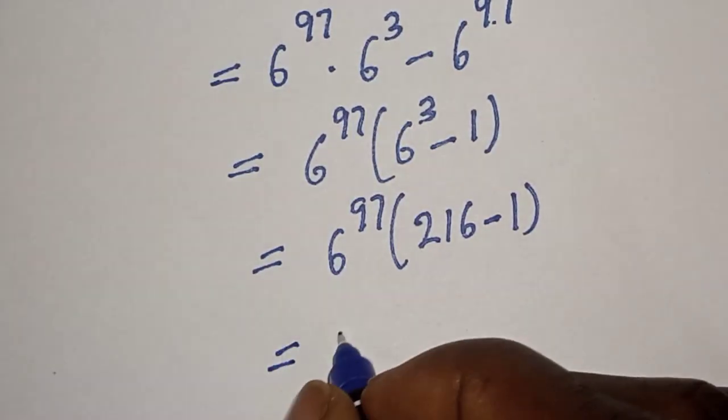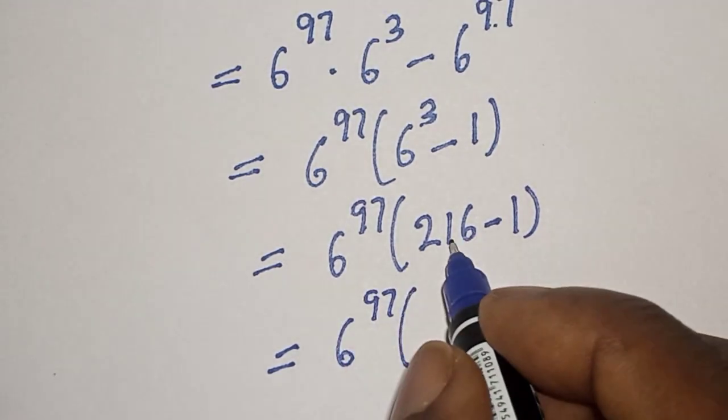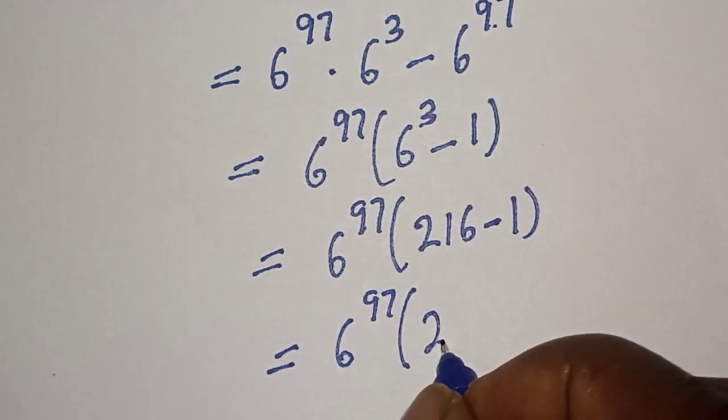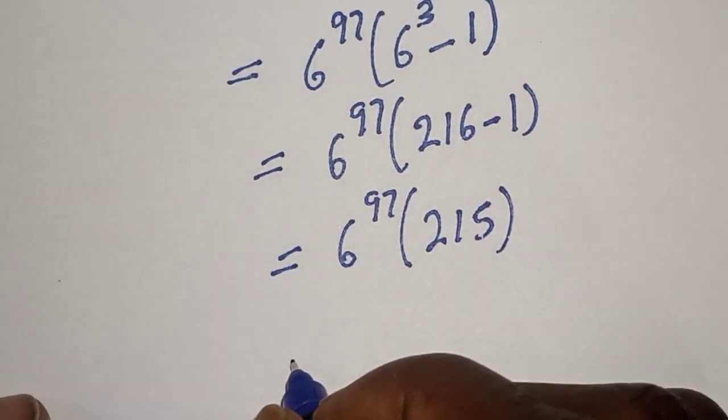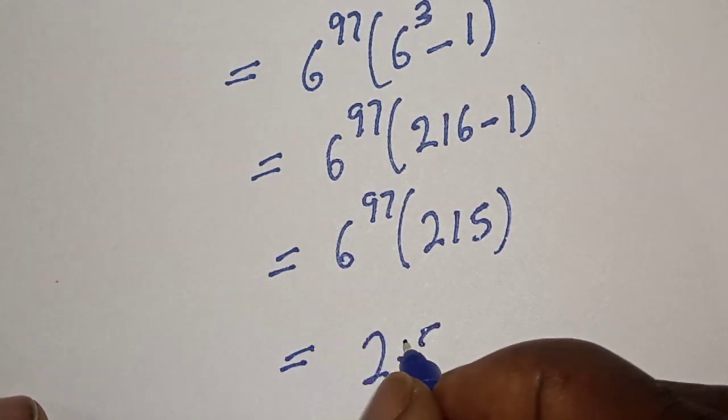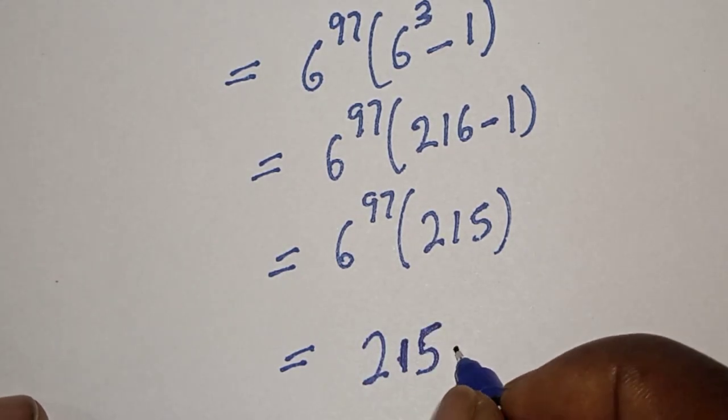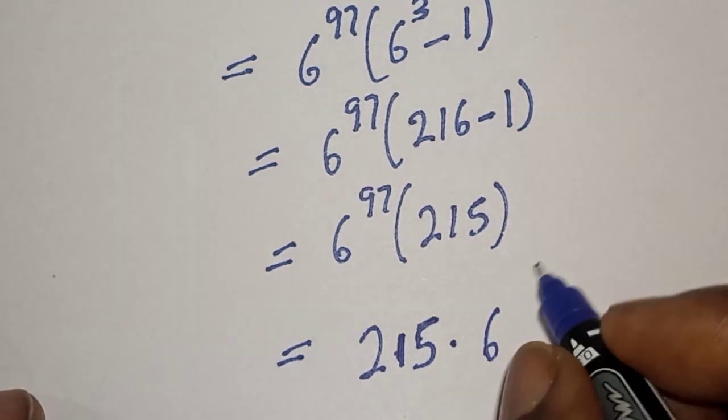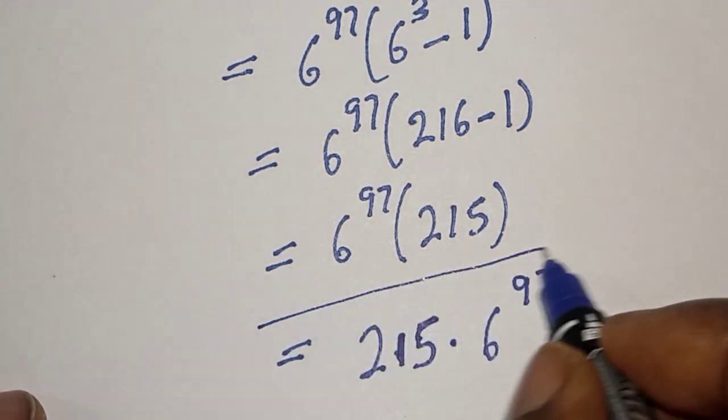this is equal to 6 to the power of 97 in brackets. 216 minus 1 is 215, and our final answer is 215 multiplied by 6 to the power of 97. Before you